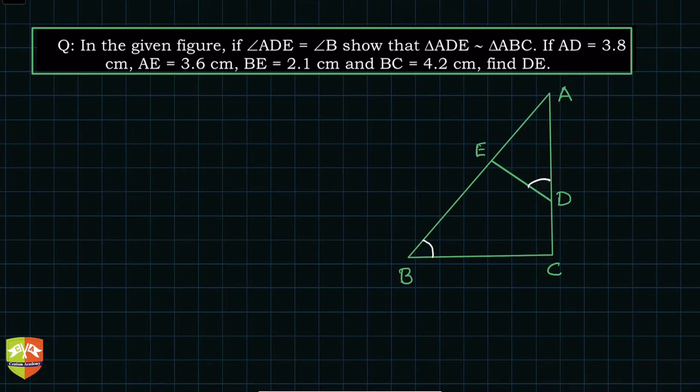So this is triangle ADE is similar to triangle ABC. First is this, and then it's given that AD equals 3.8 centimeters, BE equals 2.1 centimeters, and BC equals 4.2 centimeters. We have to find out DE. Let's say this is X and we have to find this X out here. So how to approach this problem?